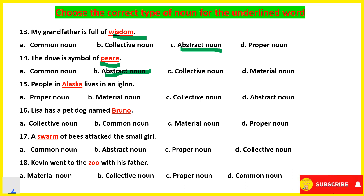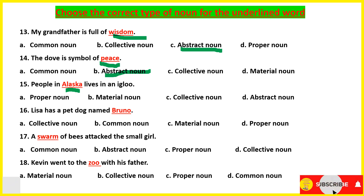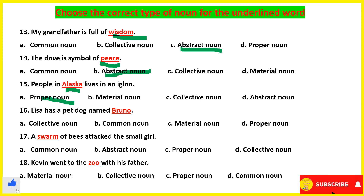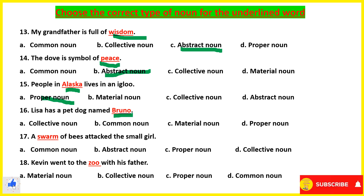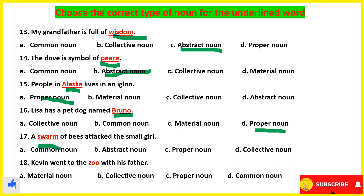'People in Alaska live in an igloo.' Alaska is the name of a particular place. Whenever we talk about a specific place or animal name, it will be proper noun. 'Lisa is a pet dog named Bruno.' Again the same thing — the answer will be proper noun.